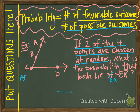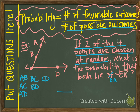We list all possibilities: we could choose A and B, A and C, A and D — that exhausts all pairs with A. Then B and C, and B and D. We've already listed A and B, so that covers both orders. What's left is C and D. That gives us six possible outcomes if we choose any two out of the four.